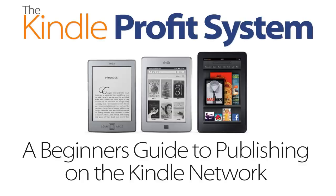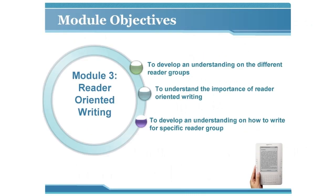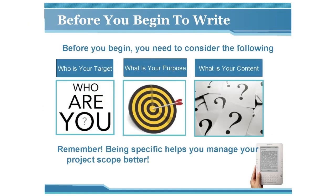Learning module three: Determining your readers. Your module objectives are to develop an understanding of the different reader groups, to understand the importance of reader-oriented writing, and to develop an understanding of how to write for a specific reader group.